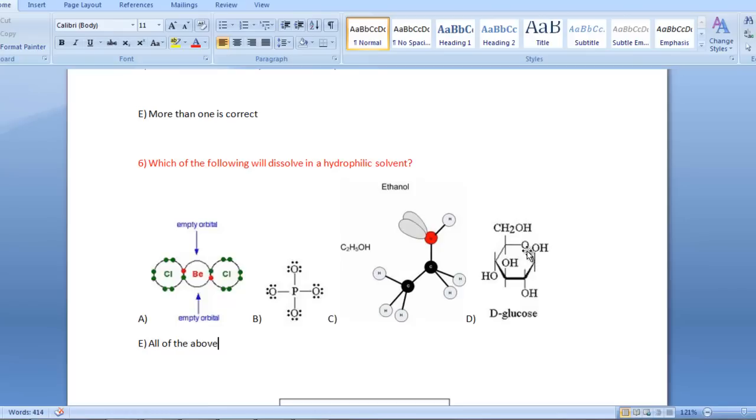However right here what we have for B, this is non-polar so this will not dissolve in the hydrophilic solvent. Alcohol definitely will dissolve. Glucose, polar with the hydroxyl group right here, definitely will dissolve. So the problem with question number six is the answer choices. It says all of the above but that is wrong, this is a mistake on my part. I could say more than one is correct, or C and D, those are the correct answers for this.